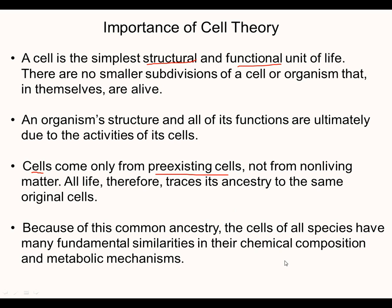Cells come from only preexisting cells — disproving spontaneous generation. All life traces its ancestry back to the same original cell, which they predict was like an amoeba — that's where everything is traced back to originally in the ideas of evolution and theorists. Because of common ancestry, the cells of all species have many fundamental similarities in chemical composition. All living organisms have DNA with the same letters — A, G, C, and T — it's just the different combinations put together that create different types of organisms. We all speak the same language; it's just in different order.